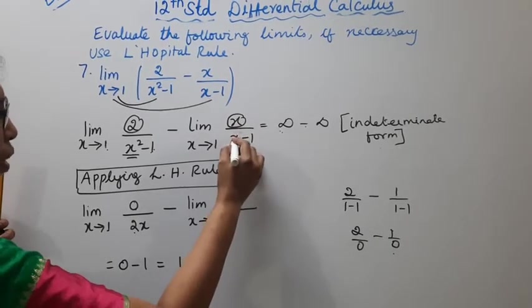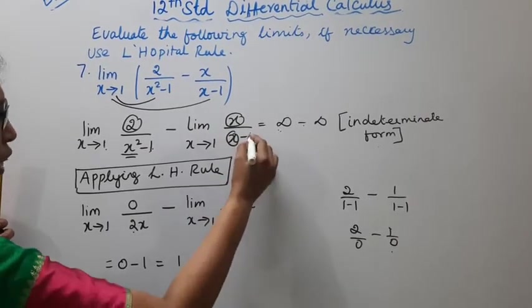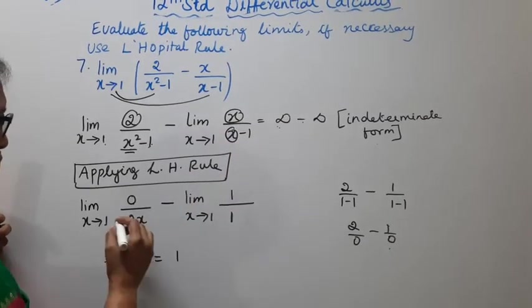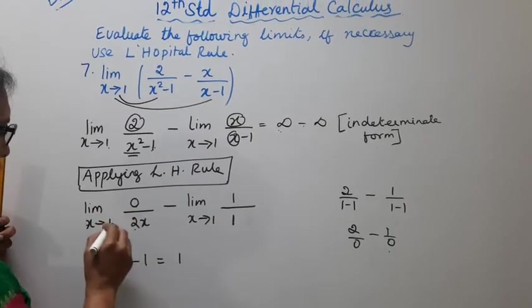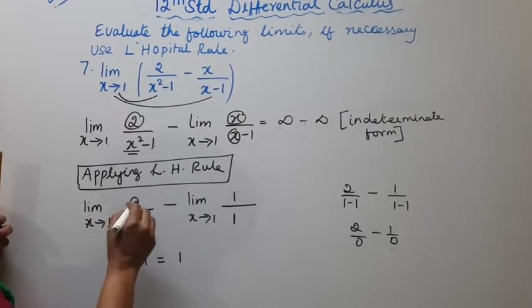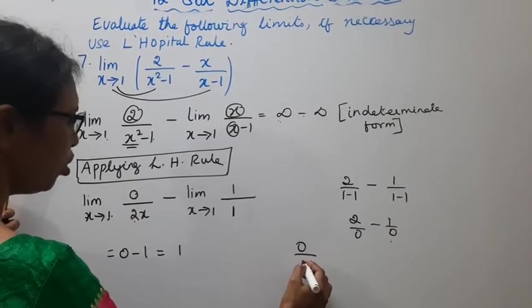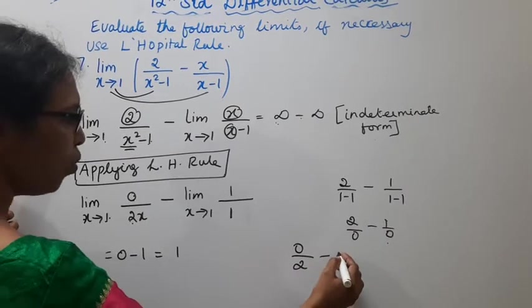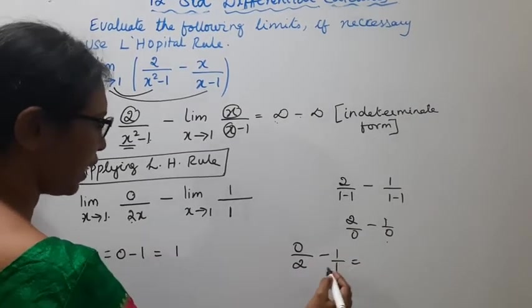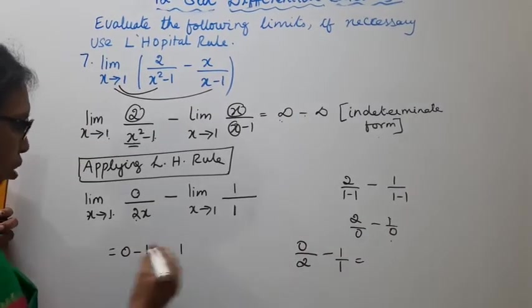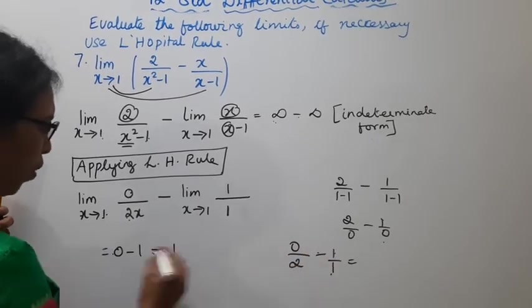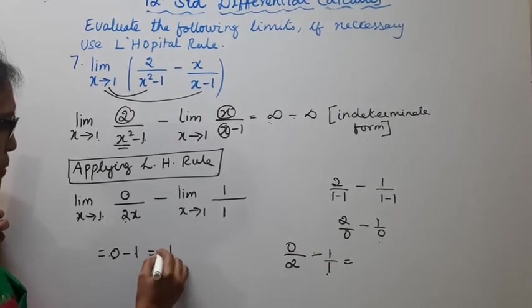Minus limit x tends to 1, x differentiate is 1, divided by x minus 1 differentiate is 1. Now x equals 1: 0 by 2 into 1, which is 0 by 2, minus 1 by 1. 0 by 2 is 0 minus 1 by 1, which equals 0 minus 1 equals minus 1. Answer.